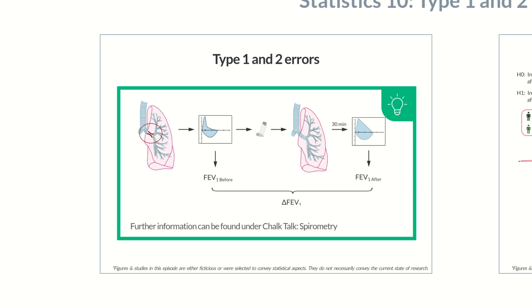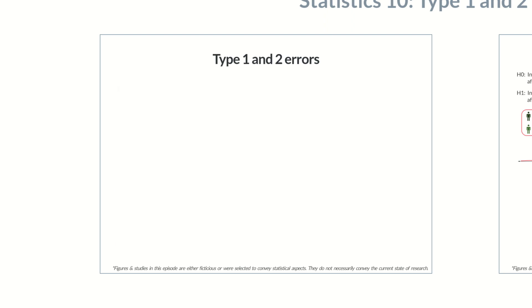From the difference between the two values, the change in the volume of forcibly expired air in one second was determined, allowing to extrapolate the efficacy of the bronchodilating drug. The null hypothesis H0 to be rejected was: in test subjects with asthma, the amount of air expired in one second does not change 30 minutes after administration of the drug.